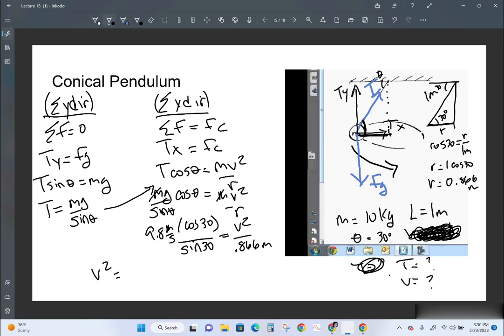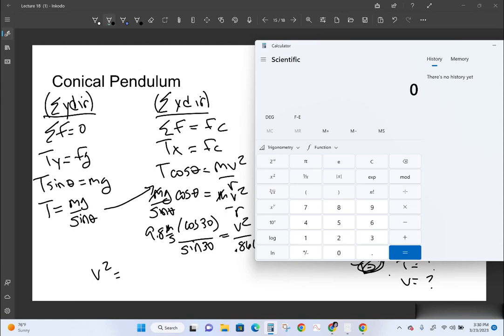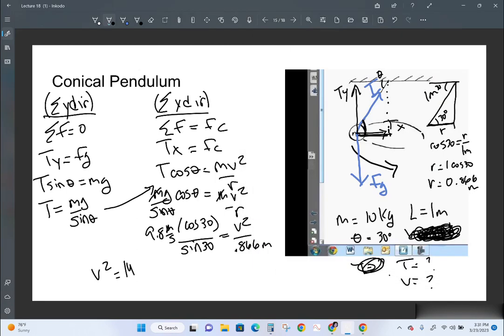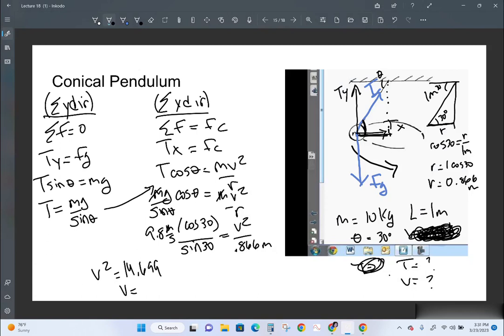So V squared, if I put all these in my calculator, so cosine is 0.867, 866, sine is 0.5. I know that just because I do that all the time, but I can do it here. Let's move it over so we can see the actual formula. All right, so I'm going to take 9.8 and multiply both sides by 0.866. I'm going to multiply it by the quantity 30 cosine, and then I'm going to divide it by sine of 30, which is 0.5. And so I'm getting V squared equal to 14.699, and now I'm going to take the square root of that. So the velocity would be 3.83.